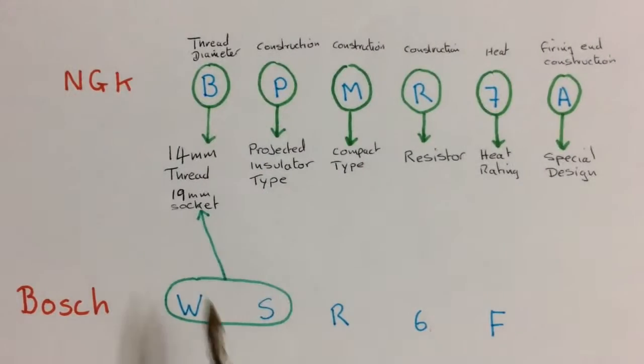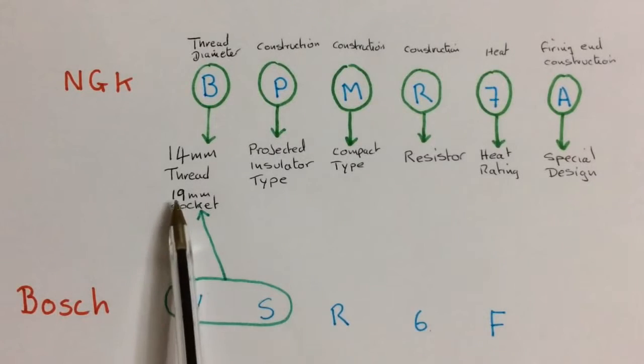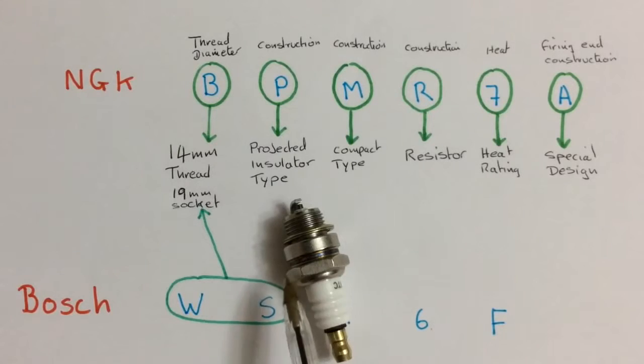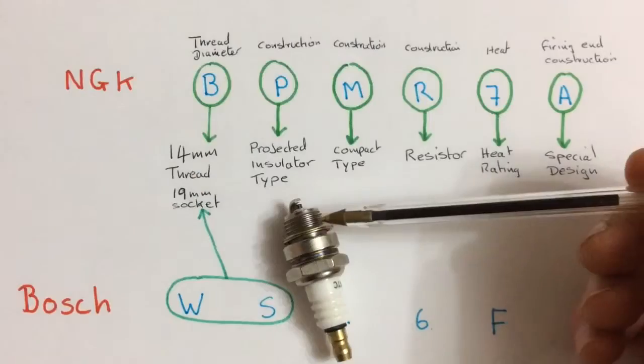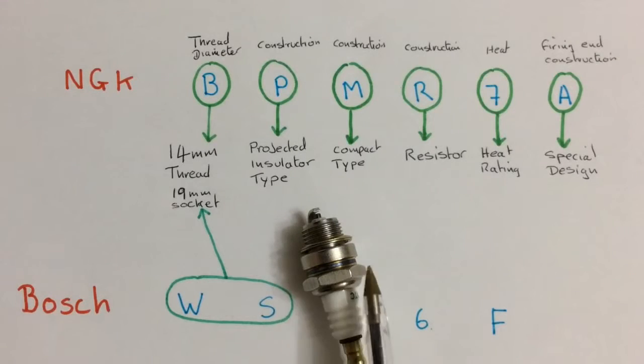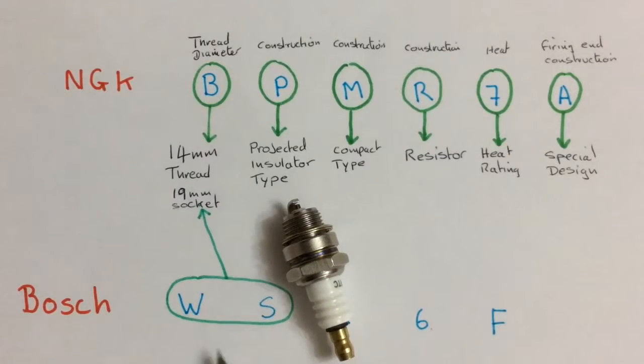So that's one similarity. But in addition, Bosch also had that this code also means 19mm socket. And all that means is this part here. The hexagon part here. The socket size part. So basically what Bosch have had this code mean is 14mm thread, 19mm socket. And that's the size of the socket you need to tighten the spark plug. So that's quite descriptive.